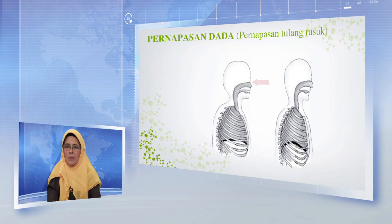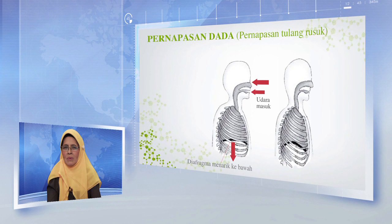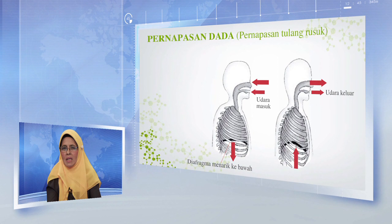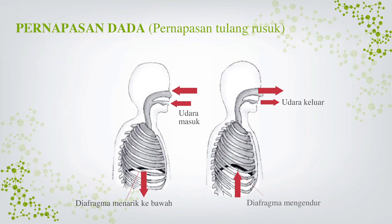Pada saat inspirasi atau menghirup udara, muskulus interkostalis atau otot antar tulang rusuk berkontraksi, sehingga tulang rusuk pun terangkat, kemudian rongga dada membesar dan paru-paru mengembang, sehingga tekanan udara dalam tubuh lebih rendah dari luar tubuh. Dengan demikian, udara masuk dari luar ke paru-paru. Pada saat ekspirasi atau menghembuskan udara, otot tulang rusuk pun berelaksasi sehingga menjadi turun kembali. Jadi rongga dada dan volume paru-paru mengecil, sehingga tekanan udara dalam paru-paru lebih tinggi daripada tekanan udara luar, dan menyebabkan udara keluar dari paru-paru. Untuk lebih jelasnya, perhatikan gambar berikut.